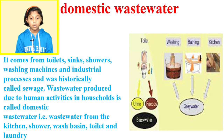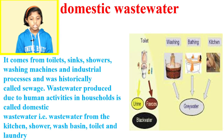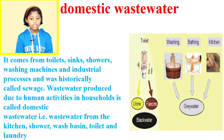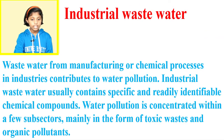Domestic wastewater comes from toilets, sinks, showers, washing machines and industrial processes, and was historically called sewage. Wastewater produced due to human activities in a household is called domestic wastewater.